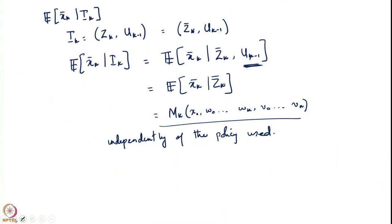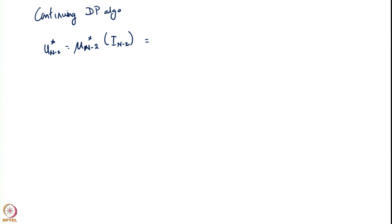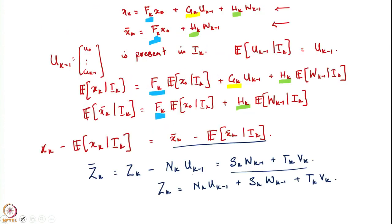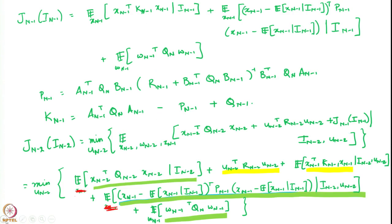We conclude that this is equal to some linear function l_{n-2} times the conditional expectation of x_{n-2} given i_{n-2}. Now that this has been done, we can substitute for u_{n-2} back into the dynamic programming equation and compute J_{n-2} as a function of i_{n-2}, and then proceed again to step n minus 3 and so on.